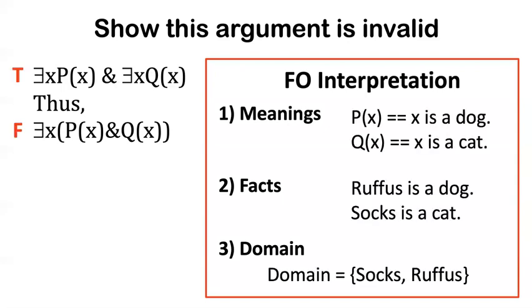Here's how I did it in order to make my counterexample. I just said let's make P be x is a dog and Q be x is a cat. So what this says is there exists a dog and there exists a cat. Thus, there exists something that's a dog and a cat. Of course, that is not valid. And my assignment of predicates here of meanings helps show that it's not valid.